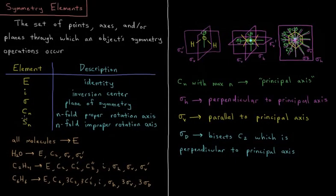Those are our five symmetry elements, each of which is associated with the various symmetry operations which occur through those points, axes, or planes. Thank you.